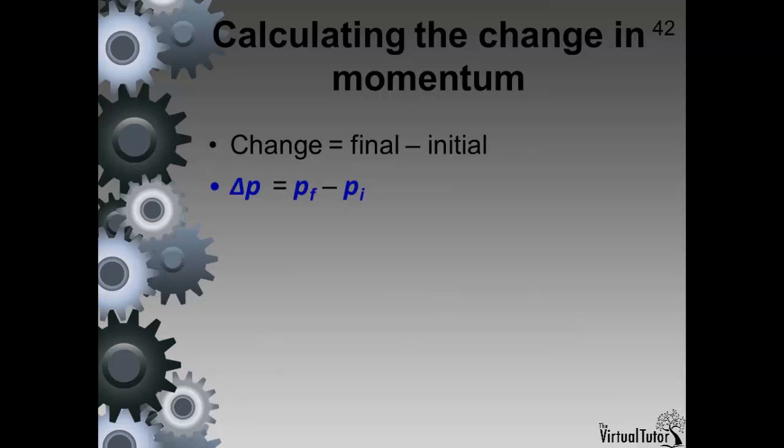So the change in momentum is the momentum of the object at the final condition minus the momentum of the object at the initial condition.